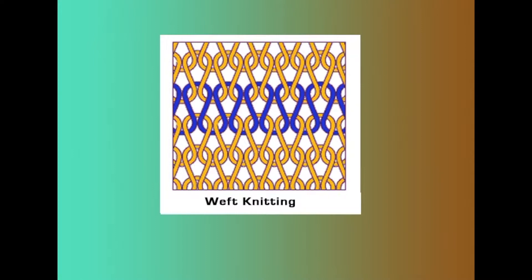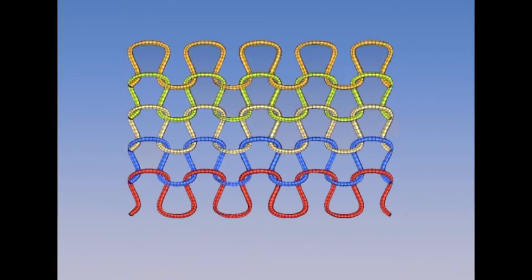Weft knitting is a process in which one yarn or a yarn set is carried back and forth or around the needles to form a fabric. Yarn moves horizontally in weft knitting fabrics. It can be done either by hand or machine. On a machine, the individual yarn is fed to one or more needles at a time. Weft knitting is a versatile method of fabric construction in terms of range of fabric structures and yarn types used.